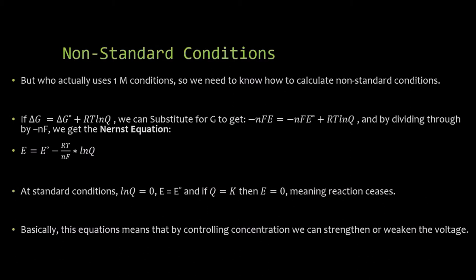Now, basically what this means is that the equations that control the concentration can strengthen or weaken the voltage, depending on how much reactants, how much products we have. Remember, when we solve for a Q expression or a K expression, we do not include pure liquids, we do not include pure solids, we only include aqueous phases and gases. So that's going to limit what's going to be in our Q expression, especially if the electrodes are metal.